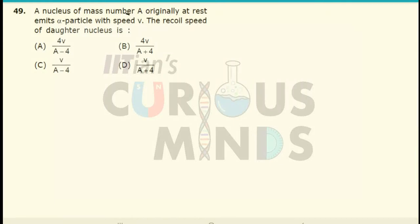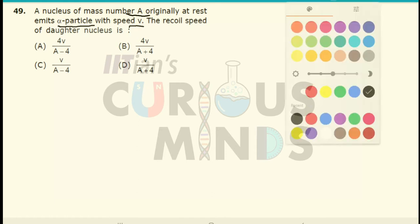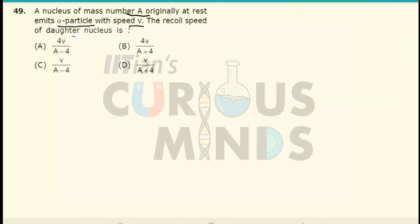A nucleus of mass number A originally at rest emits an alpha particle with speed V. The recoil speed of the daughter nucleus will be equal to.